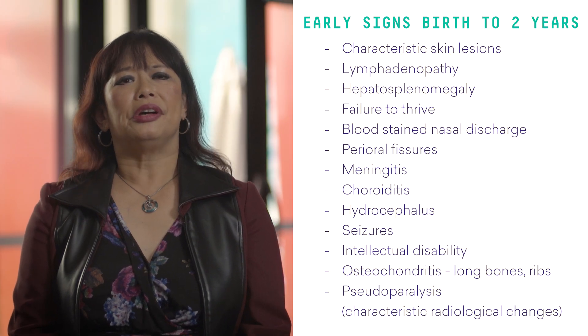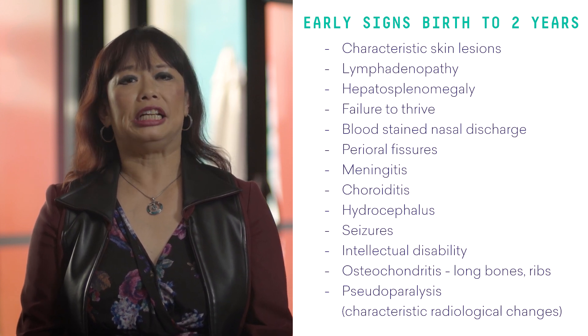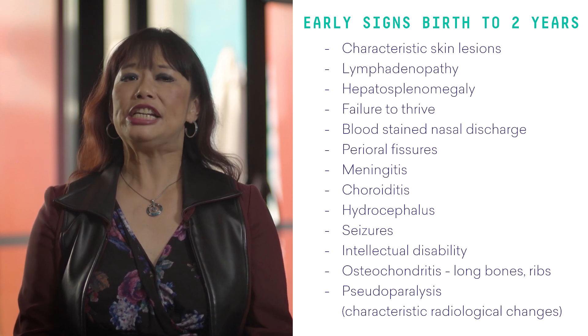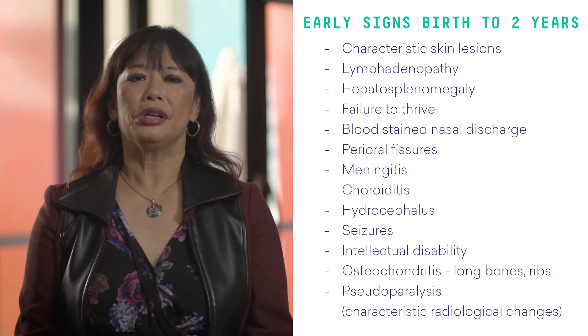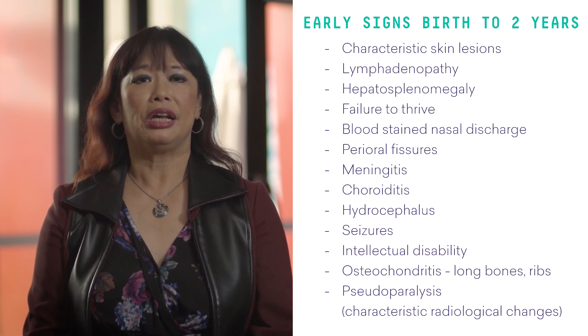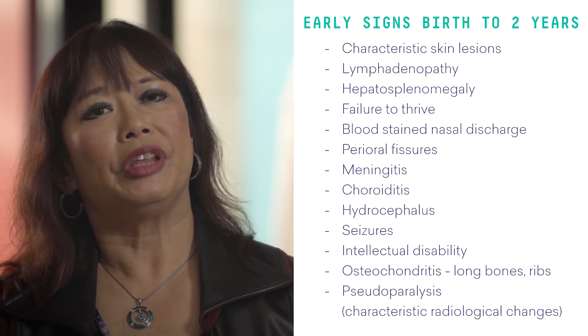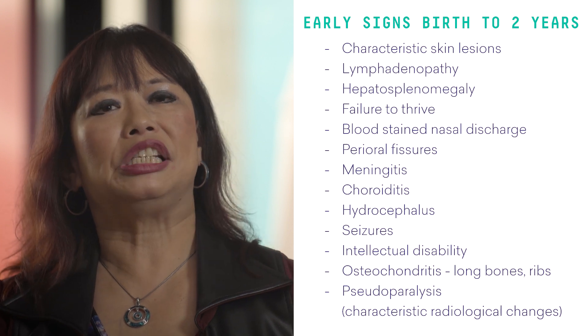Congenital syphilis is a multi-system involvement transmitted to the fetus via the placenta. It is divided into early congenital syphilis — from birth to age 2 — and late congenital syphilis, which is after age 2. Early signs include characteristic skin lesions, lymphadenopathy, hepatosplenomegaly, failure to thrive, blood-stained nasal discharge, perioral fissures, meningitis, chorioretinitis, hydrocephalus, seizures, and intellectual disability. There can also be osteochondritis involving the long bones and ribs, as well as pseudoparalysis with characteristic radiological changes.